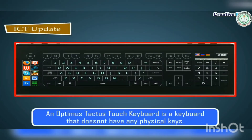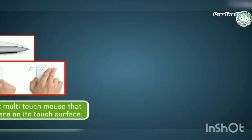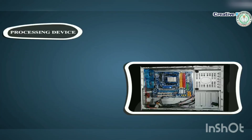ICT update: An Optimus Tactus touch keyboard is a keyboard that does not have any physical keys. The Magic Mouse is the world's first multi-touch mouse that lets you click or double-click anywhere on its touch surface.